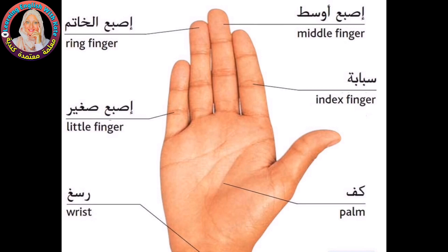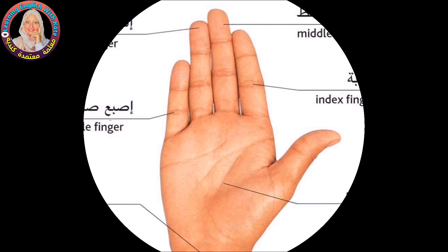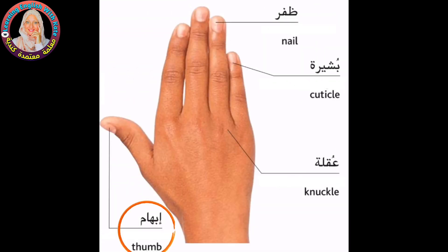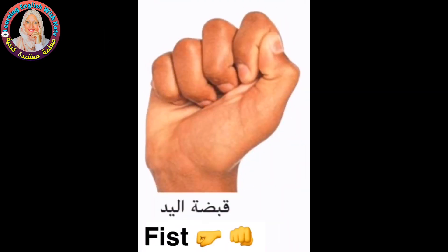The hand: ring finger, little finger, wrist, middle finger, index finger, palm, thumb, nail, cuticle, knuckle, fist.